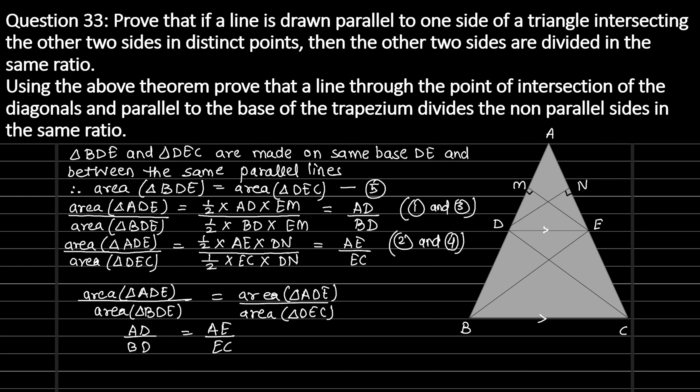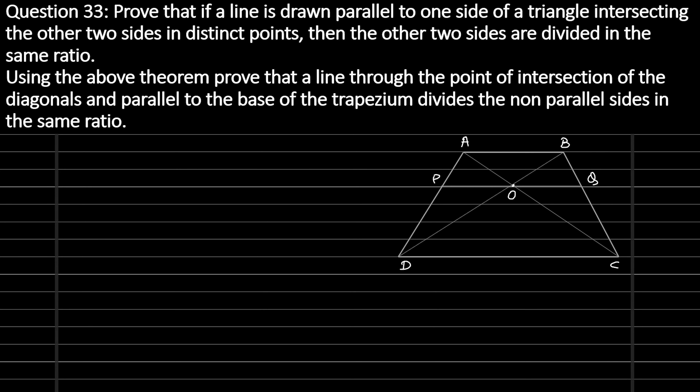Now we have to solve the second part of this question. Using this theorem, we have to prove that a line through the point of intersection of the diagonals and parallel to the base of a trapezium divides the non-parallel sides in the same ratio. We have drawn trapezium ABCD, joined diagonals AC and BD, and drawn line PQ parallel to CD and AB, naming the point of intersection of AC, BD and PQ as point O.